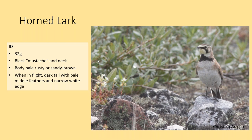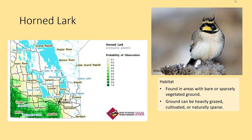The Horned Lark is quite a bit smaller than the meadowlark. It has a very characteristic black mustache — feathers coming down off the beak. Its body is a pale rusty or sandy brown, darker on the back than the underside. In flight it shows a dark tail with pale middle feathers and narrow white edges. The 'horns' are feather tufts that can be raised and lowered. Horned Larks like areas with bare or sparsely vegetated ground, whether heavily grazed, cultivated, or naturally sparse.